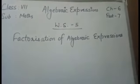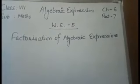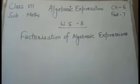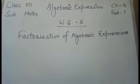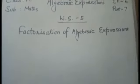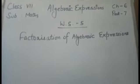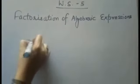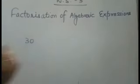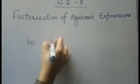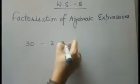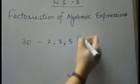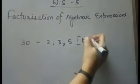Students, do you remember the concept of factors and multiples you studied in class 6? Let us recall. Take the number 30 — the prime factors of 30 are 2, 3, and 5. These are the prime factors of 30.